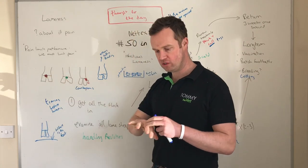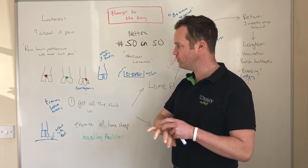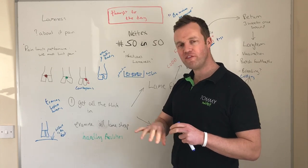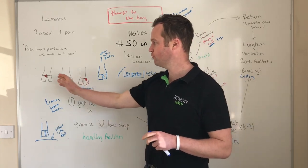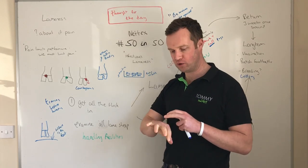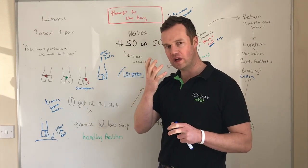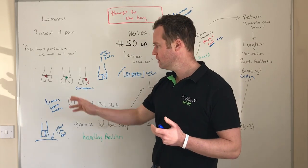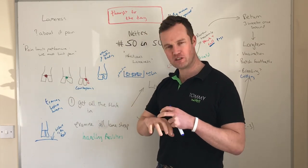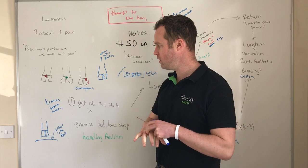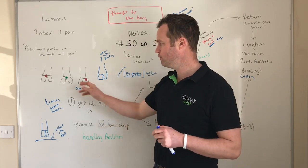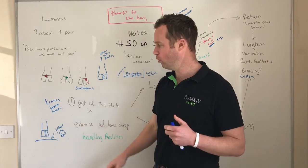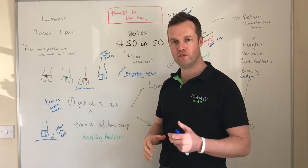First is scald — reddening between the feet caused by Fusobacterium and Dichelobacter, often seen in lambs. It's often associated with the next stage, foot rot, which is much more severe — that typical smell. Scald won't typically smell but shows reddening between the cleats. Foot rot is much more infectious, with chronic inflammation caused by Fusobacterium bacteria getting in there.